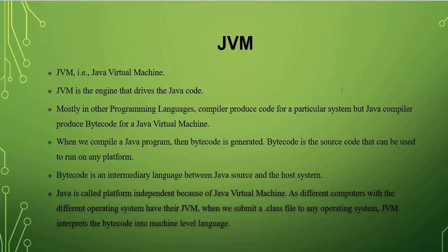But the Java compiler produces bytecode for a Java Virtual Machine. When we compile a Java program, bytecode is generated — the Java source code is converted into bytecode by the compiler. Bytecode is the source code that can be used to run on any platform. Java is platform independent because of the Java Virtual Machine. The bytecode is an intermediary language between Java source and the host system.